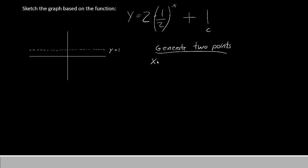The easiest point to generate is the one where x equals 0. So let's plug 0 into the equation. y would equal 2 times 1 half raised to the 0 plus 1. 1 half raised to the 0 is simply 1. So we'll have 2 times 1 plus 1. 2 times 1 is 2 plus 1 makes 3. So our first point is 0, 3.